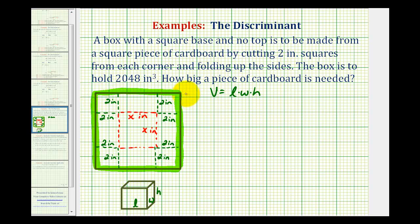So the length of this entire side here would be x, plus 2, plus 2, or x plus 4. And because this is a square, this length here would be the same.